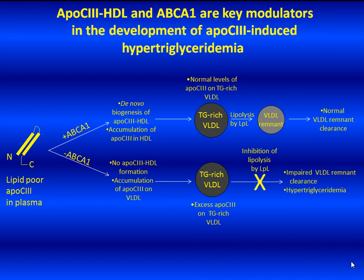In contrast, deficiency in ApoE1 prevents the de novo biogenesis of ApoC3-containing HDL and promotes accumulation of the vast majority of plasma ApoC3 on triglyceride-rich VLDL. This results in inhibition of plasma lipoprotein lipase and the development of hypertriglyceridemia.